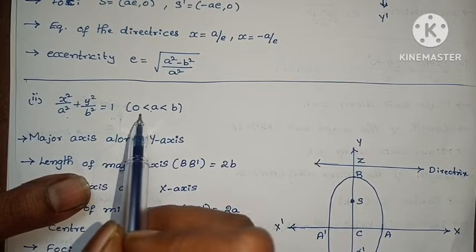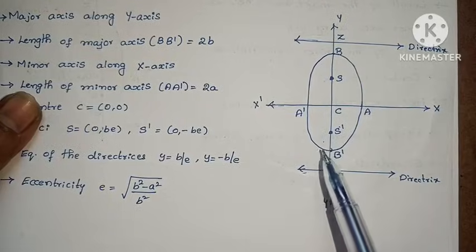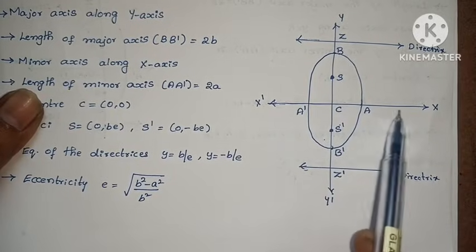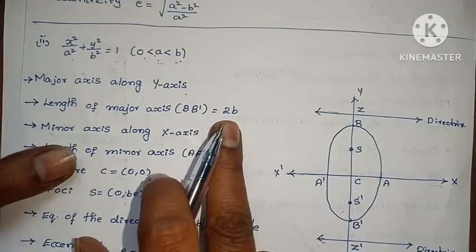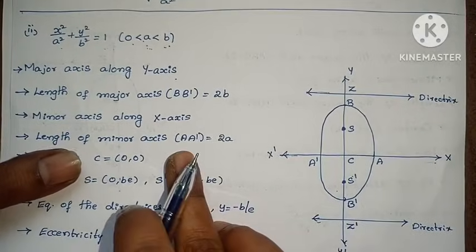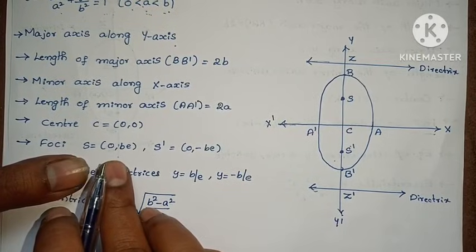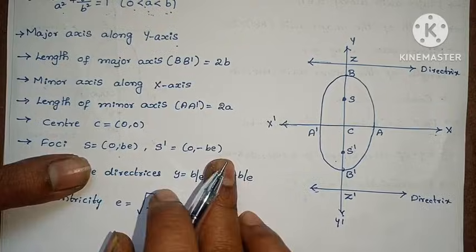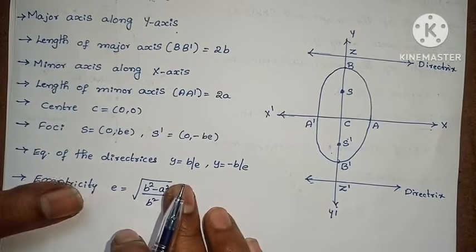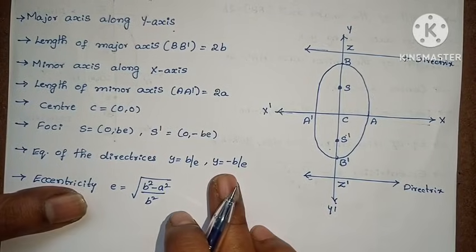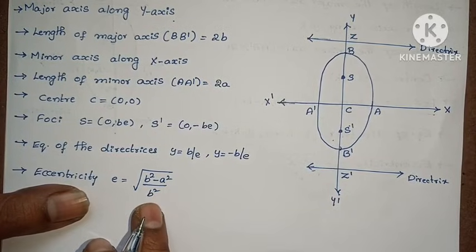When b greater than a, the major axis is along the y-axis and minor axis is along the x-axis. Length of major axis BB' equals to 2b. Length of minor axis AA' equals to 2a. Center is (0,0). Focus S equals to (0, be) and S' equals to (0, −be). Directrix: y equals to ±b/e. Eccentricity equals to root of (b² minus a²) by b².